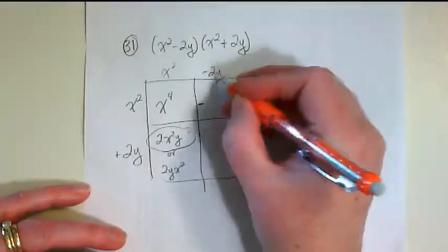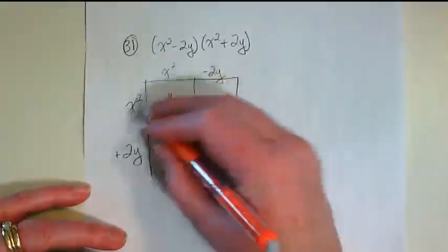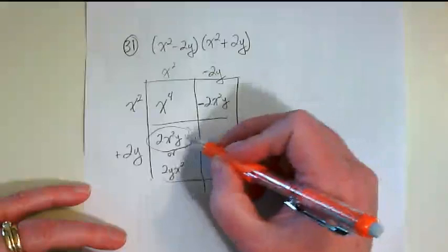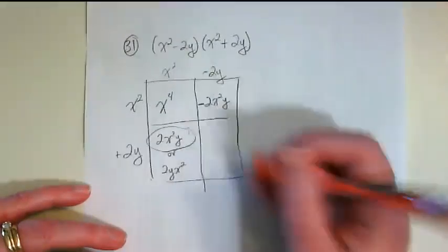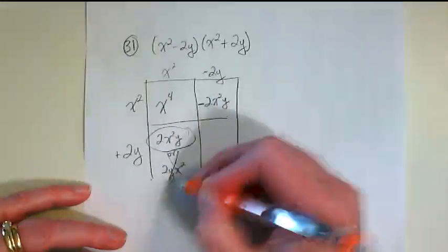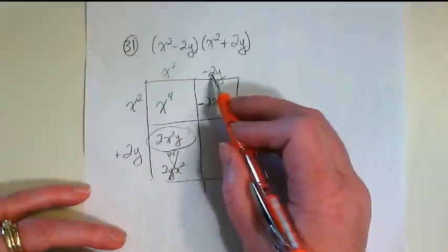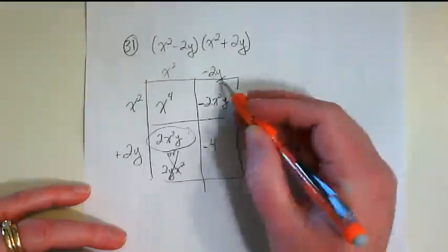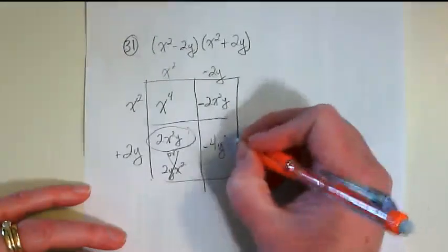So negative 2 times x squared times y. I did it so these two match. I'll cross this off just so I don't have extra things. And then negative 2 times positive 2 gives us negative 4. Y times y gives us y squared.